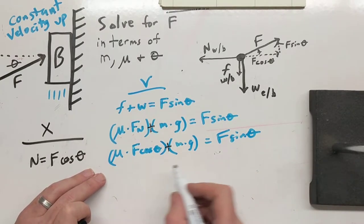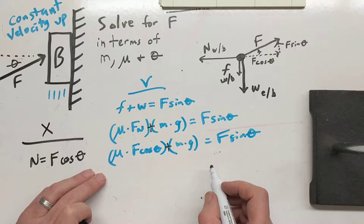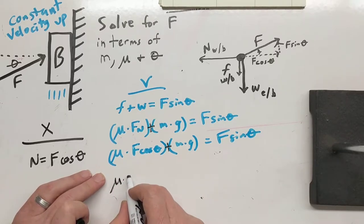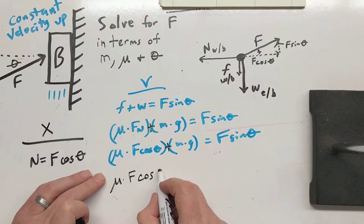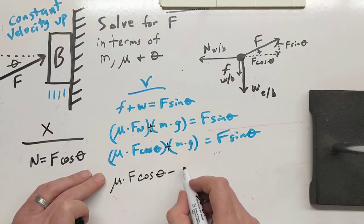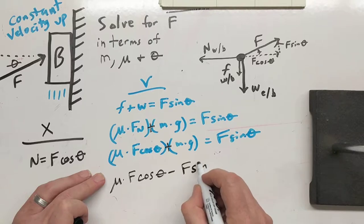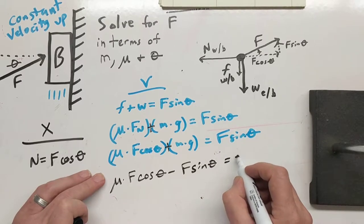Mu times F cosine theta minus F sine theta equals negative mg.